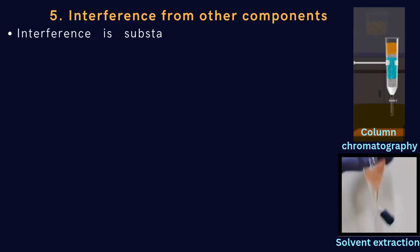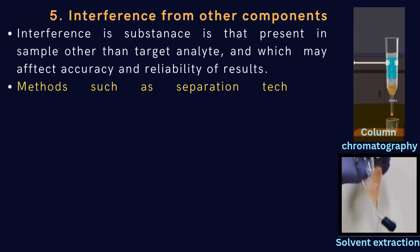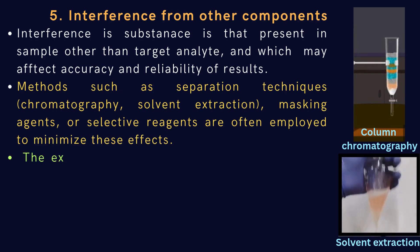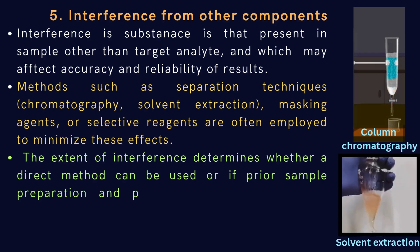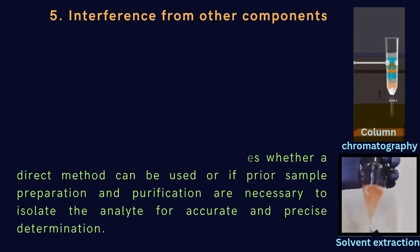Fifth factor is interference from other components that may also affect the chemical analyses. Interference is substances that are present in sample other than target analyte and which may affect accuracy and reliability of results. Methods such as separation techniques, chromatography, solvent extraction, masking agents, or selective reagents are often employed to minimize these effects. The extent of interference determines whether a direct method can be used or if prior sample preparation and purification are necessary to isolate the analyte for accurate and precise determination.